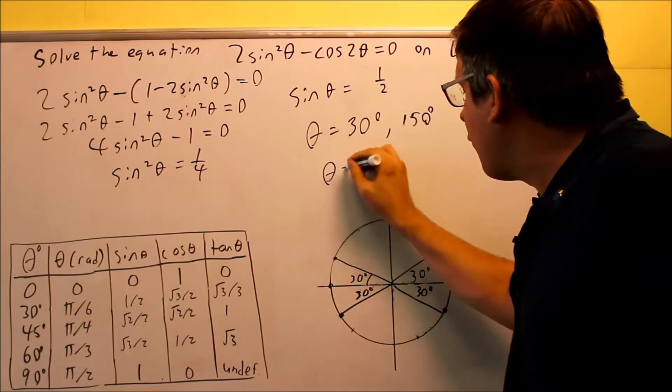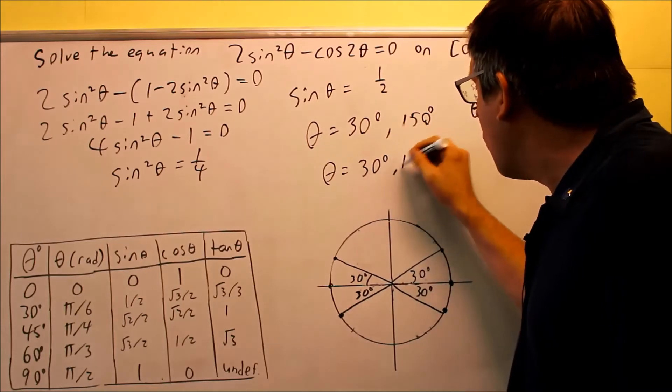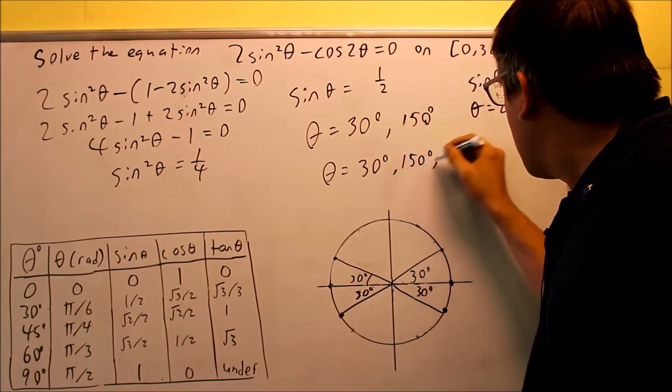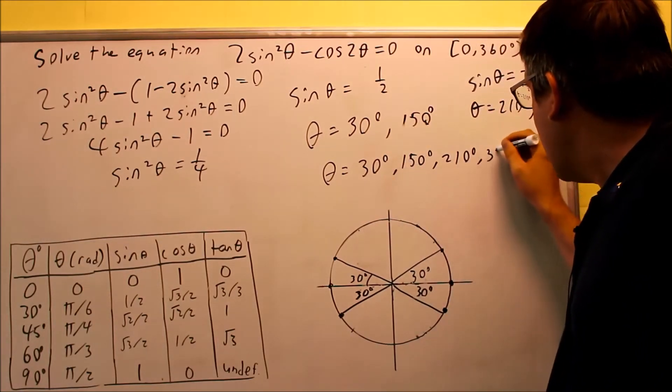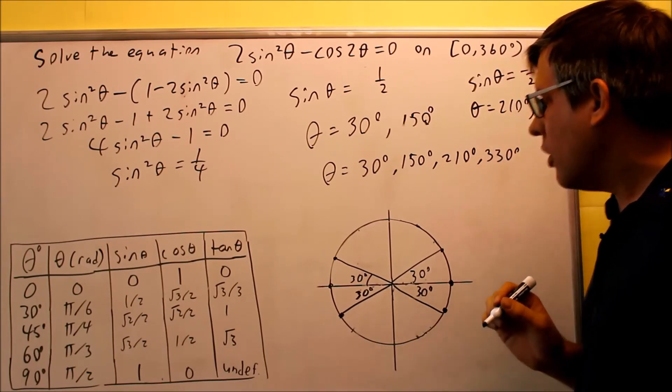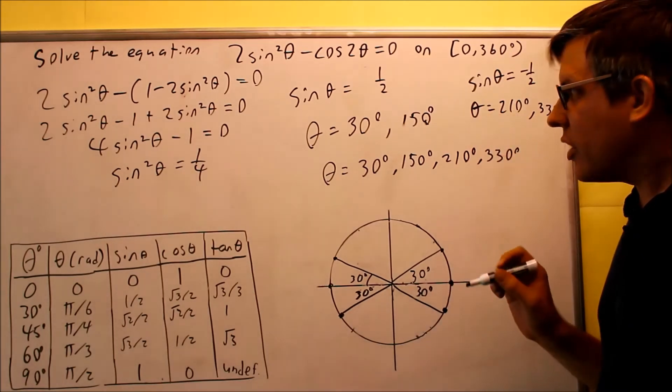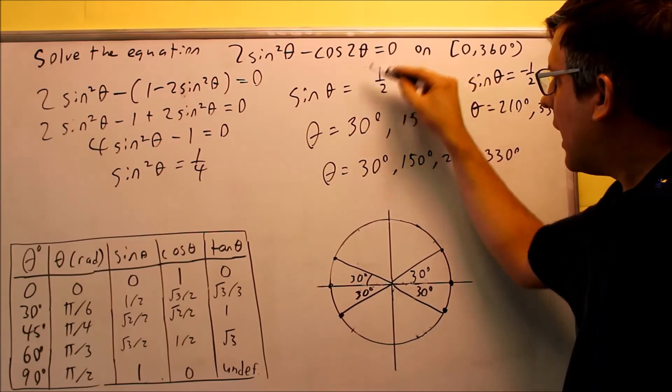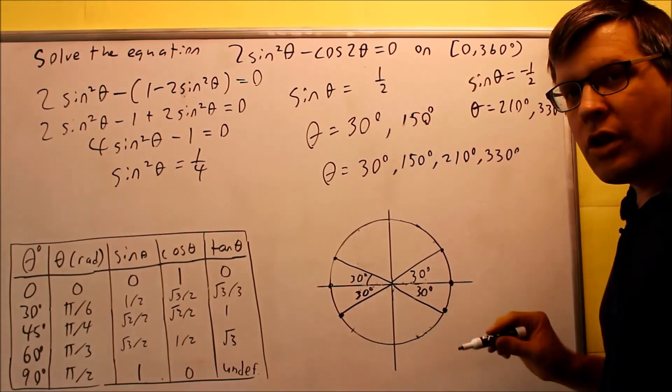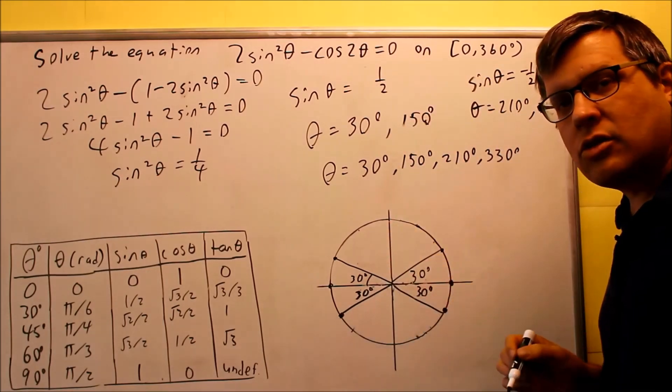We actually have four answers: 30, 150, 210, and 330. Those are your four solutions for this one. We have to do four because we're considering both the positive version and the negative version. We get actually one answer in each quadrant.